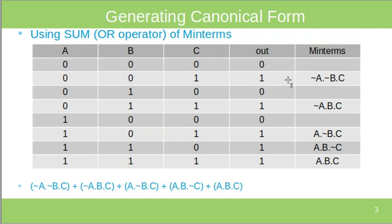We take the second row, then the fourth, and three more, giving us five minterms. The boolean function will be the sum (OR) of these five minterms. This is the canonical form of this truth table.